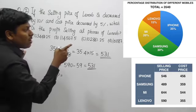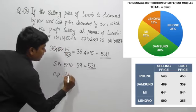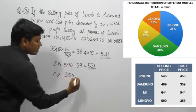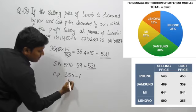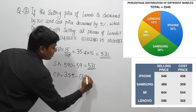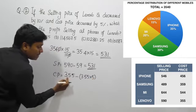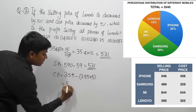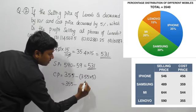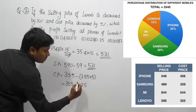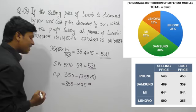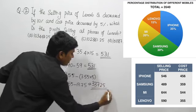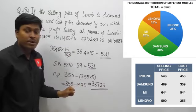The cost price of Lenovo is decreased by 5 percentage. The cost price of Lenovo is 355. One percentage of 355 is 3.55, so 5 percentage is 3.55 × 5 = 17.75. Subtracting: 355 − 17.75 = 337.25. The new cost price of Lenovo is 337.25.